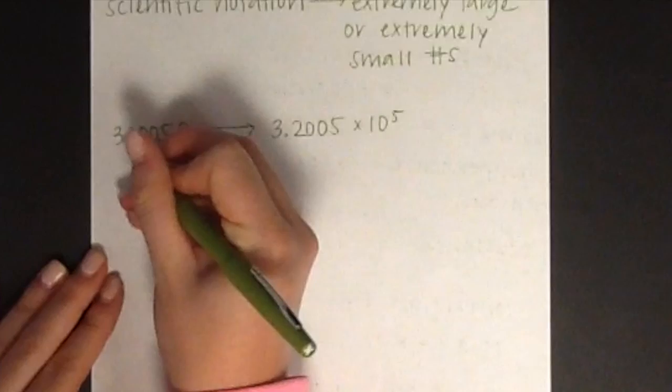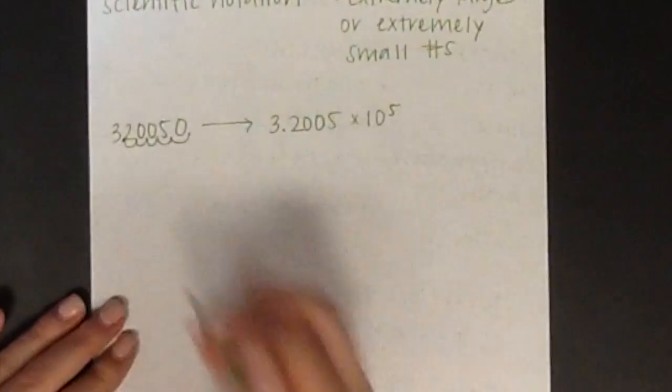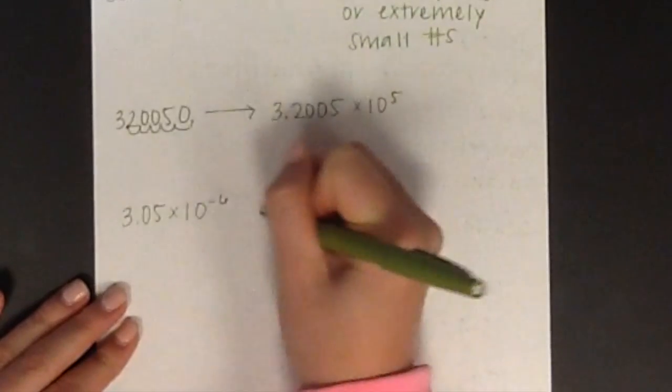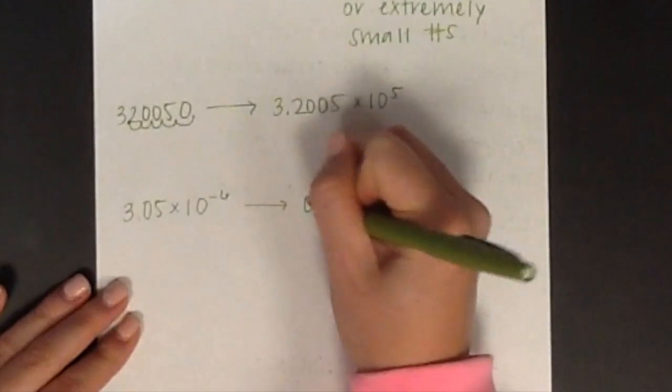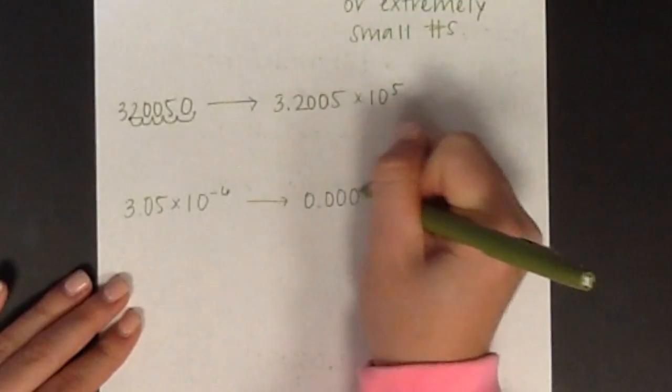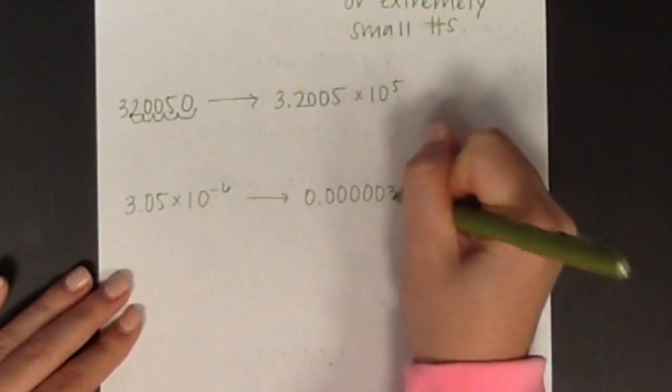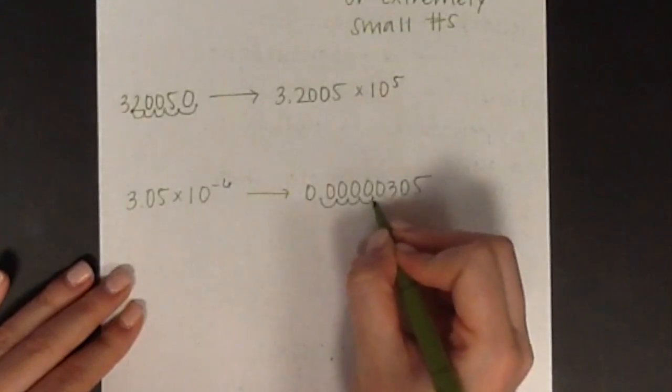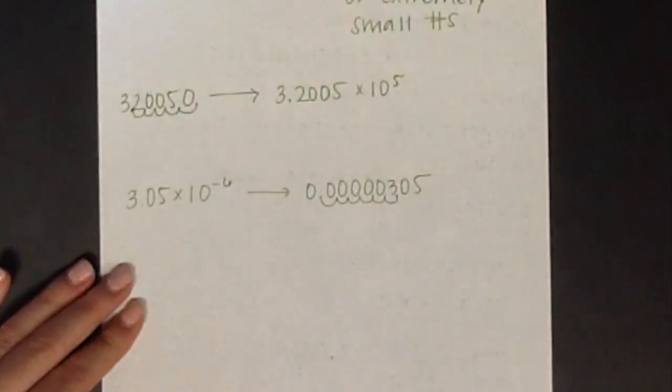This number converted to a standard number is 0.50305. When you start at where the decimal used to be and move left six decimal places, then this is the correct standard notation for this number. There are three significant digits in the first number, so there will be three significant digits in the final answer.